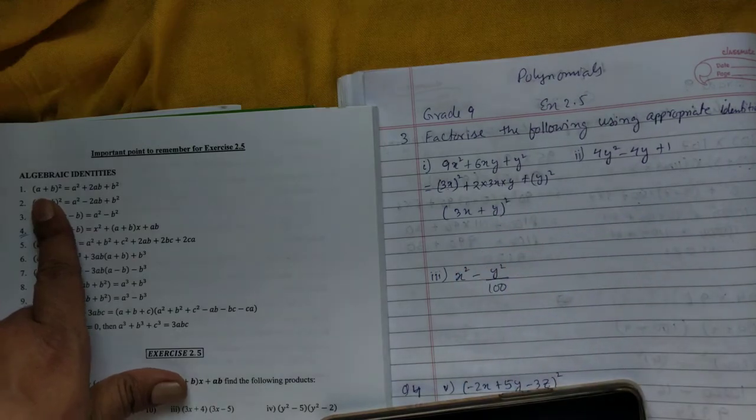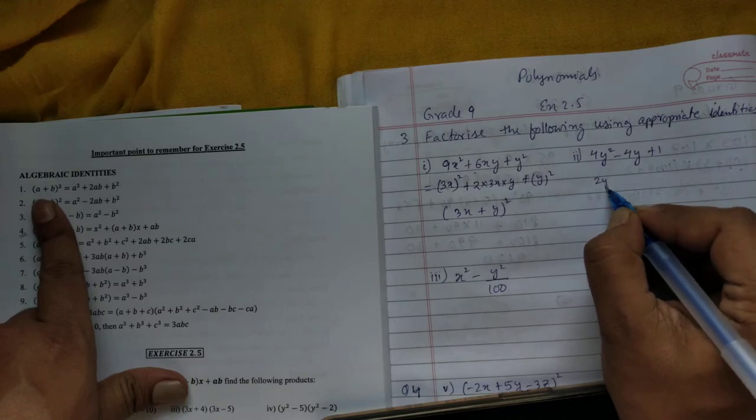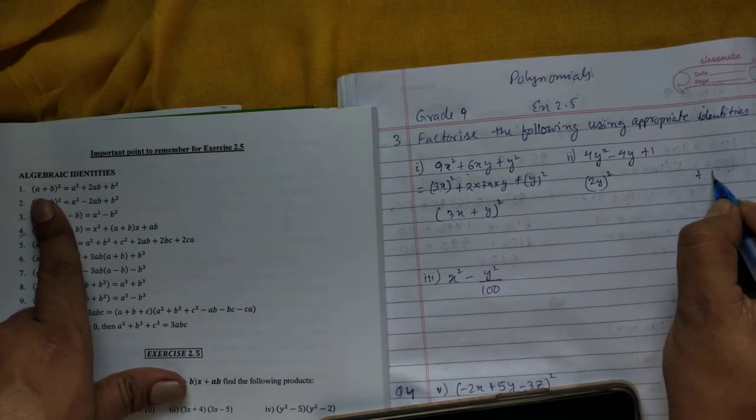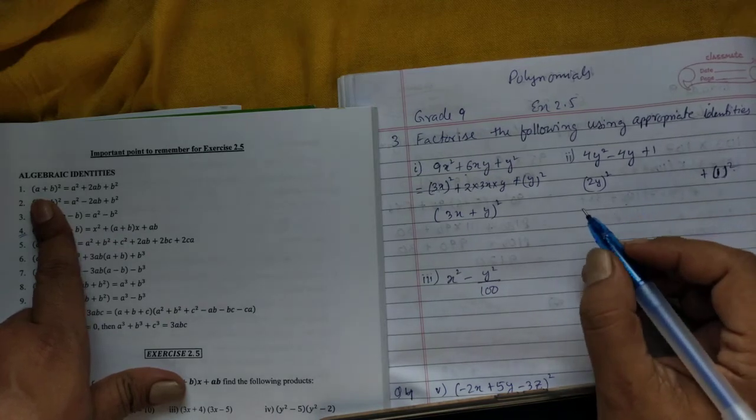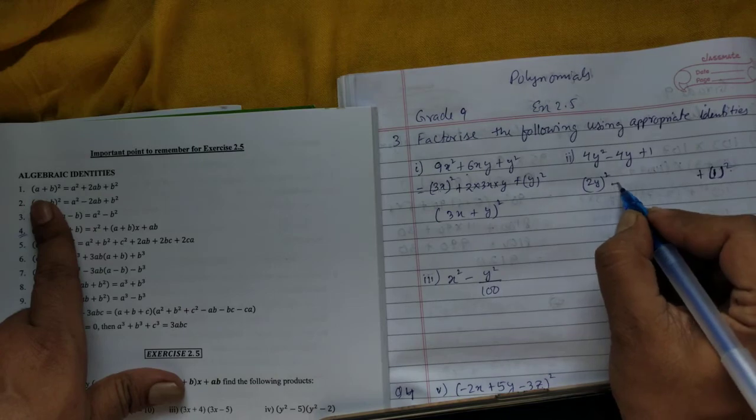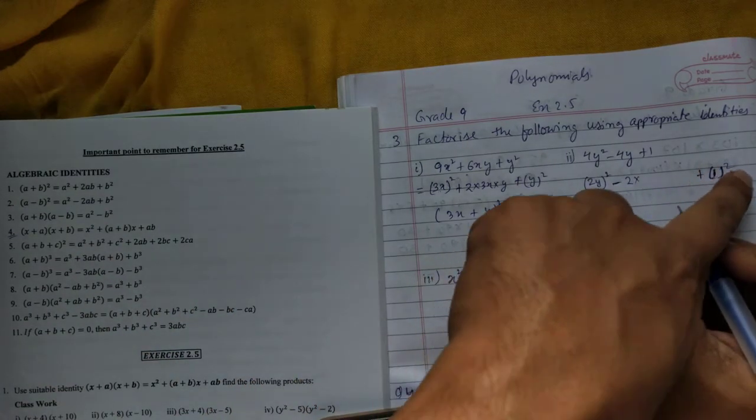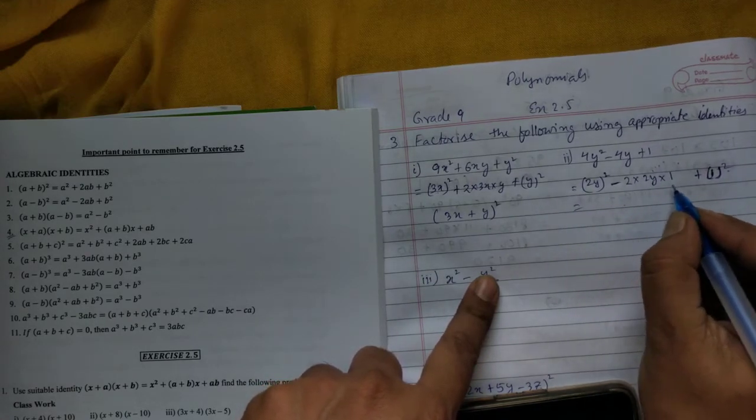and 1². Now we have minus, so write -2AB. That's 2 times 2y times 1. Multiply and check: does it match the middle term? 2 times 2 is 4, times y is 4y